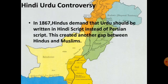One of the things that forced Muslims to demand a separate state was the Hindu-Urdu controversy in 1867, when Hindus demanded that Urdu be replaced with Hindi script.